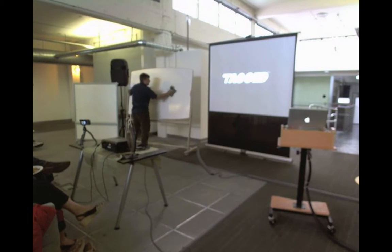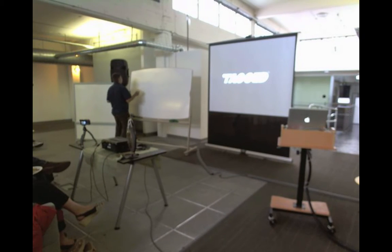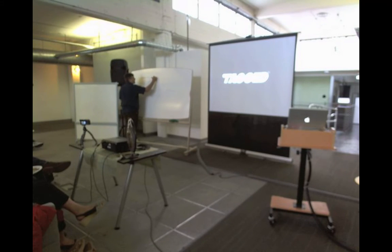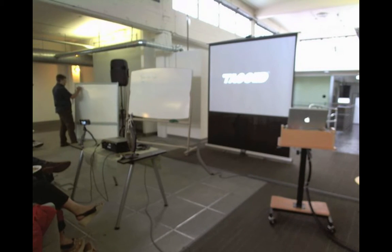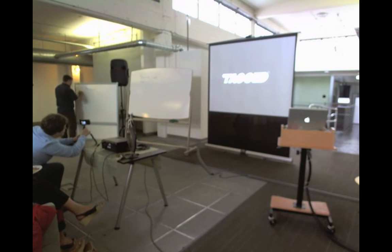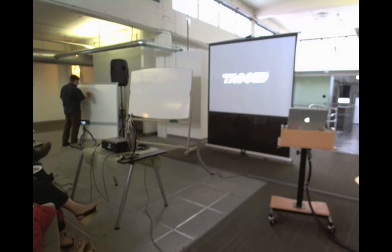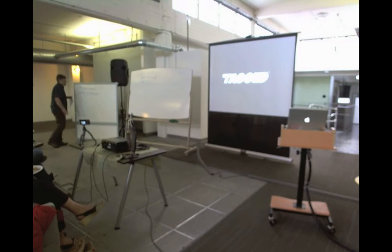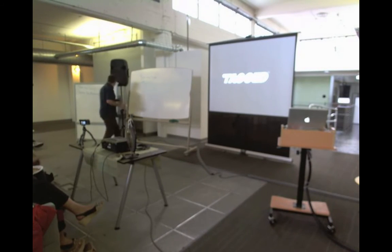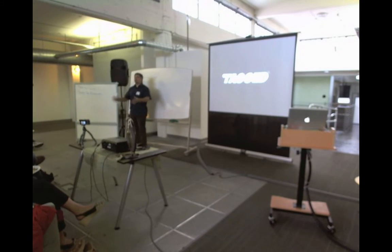We have a guiding principle to what we do, summarized by: data has shape, and shape has meaning. What we want to do is extract the meaning from shape. That's what this talk is going to be about — how do we get meaning from the shape of data? What does that mean and how do we do it?